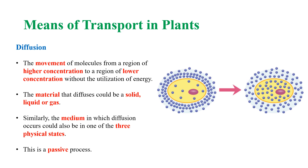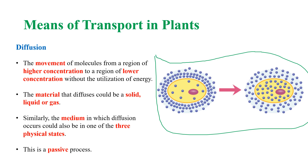There are different means of transport in plants. Let us begin with diffusion. Diffusion is defined as the movement of molecules from a region of higher concentration to a region of lower concentration without utilizing energy. This definition is well illustrated by a figure which shows the movement of molecules from a region of higher concentration to a region of lower concentration.